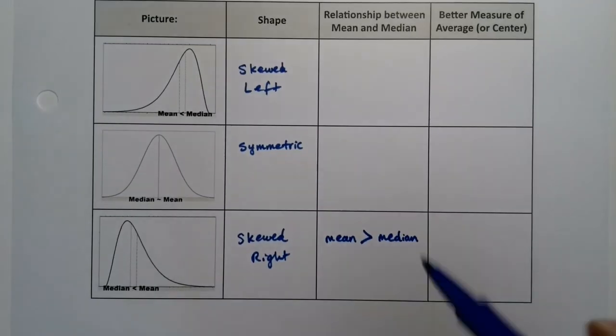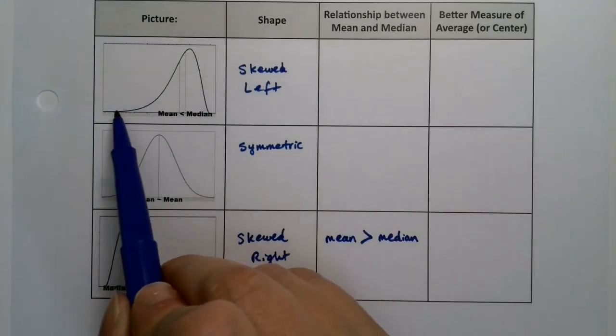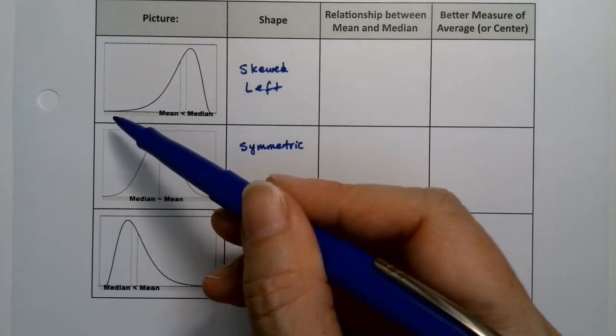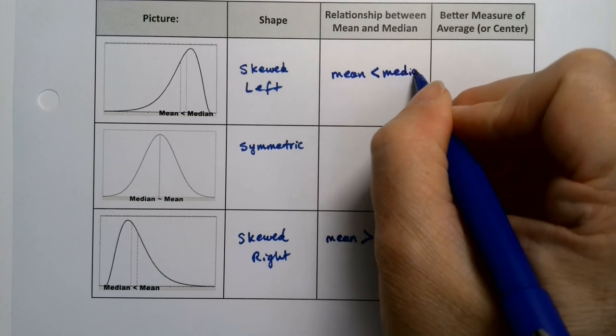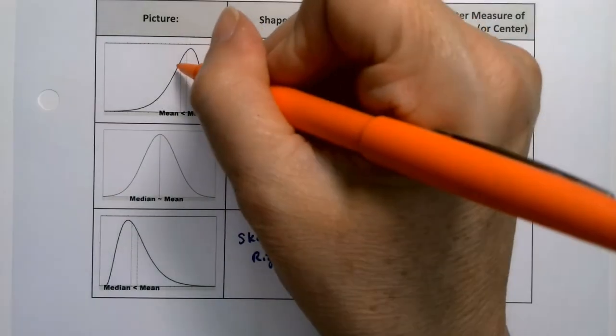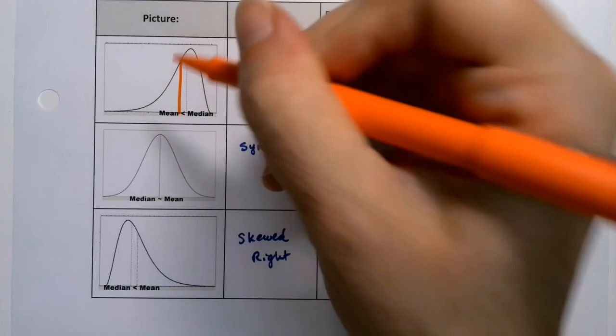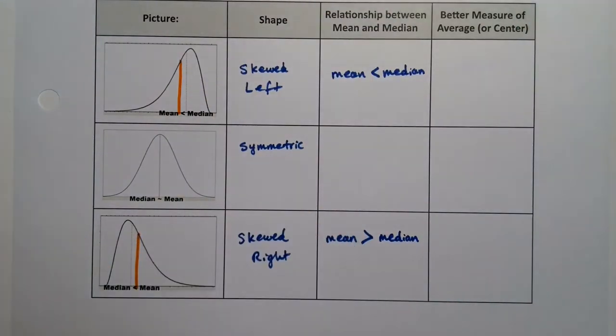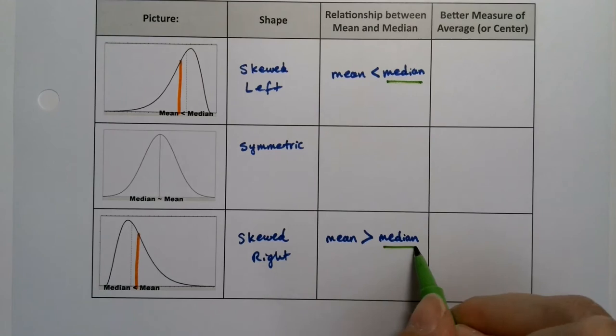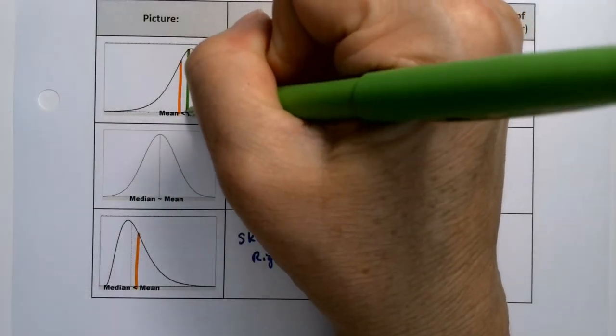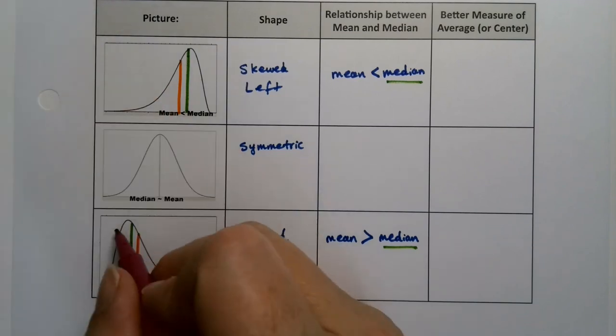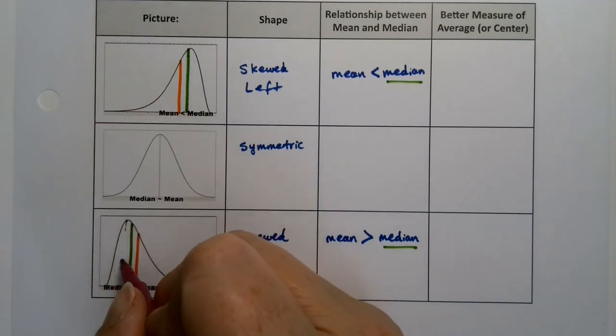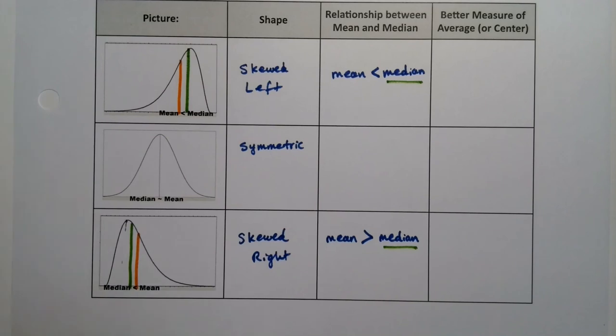By the same token, if it's skewed left, then the mean will get pulled towards the low side, so the mean will be less than the median. And you can actually see it on the graph. This is the mean right here, and then the median is right here. The mode is actually the highest point. So the mean is less than the median, mean greater than the median.